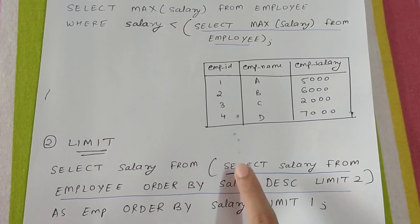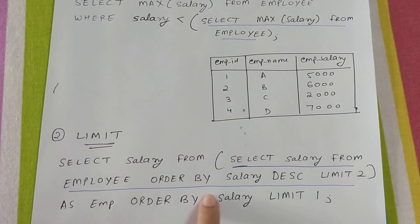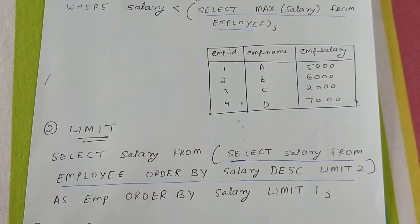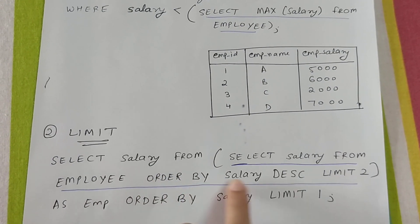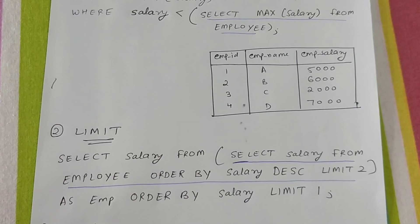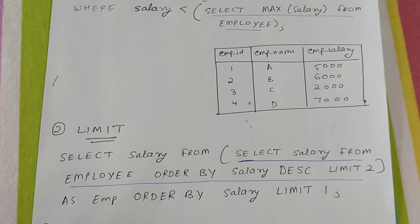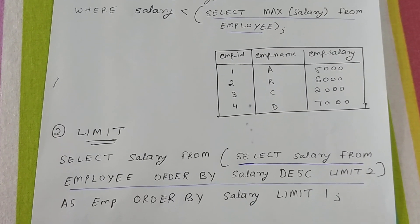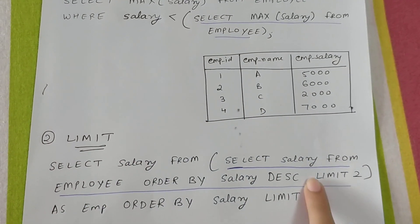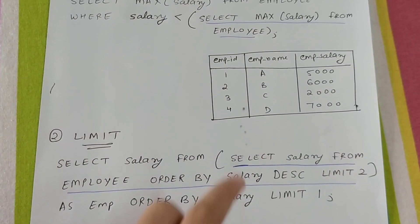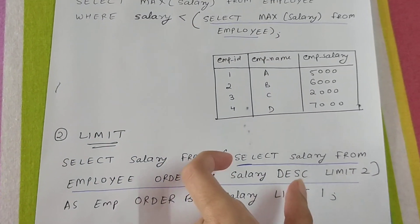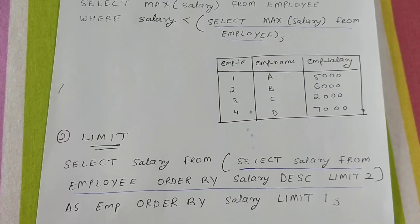ORDER BY sorts the data in a particular order. In this case, ORDER BY salary DESC sorts from bigger to smaller: 7000, 6000, 5000, 2000. LIMIT 2 means only the top two values — 7000 and 6000 — are returned by this inner query.